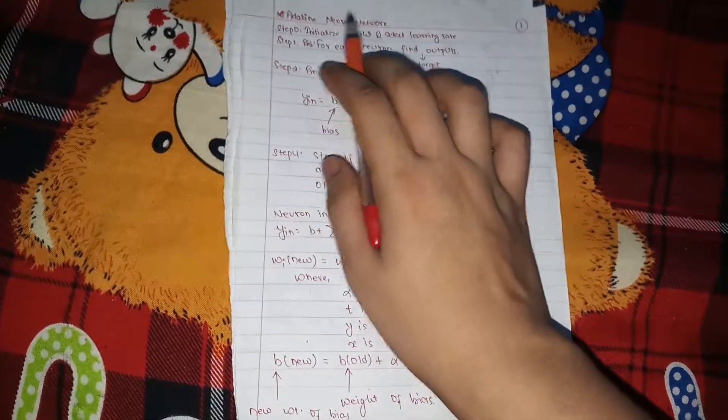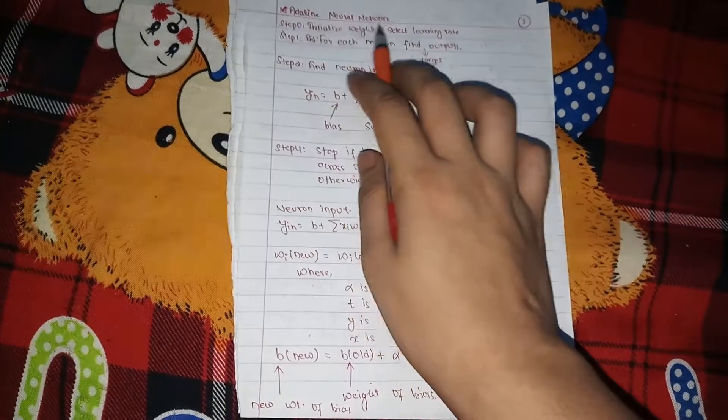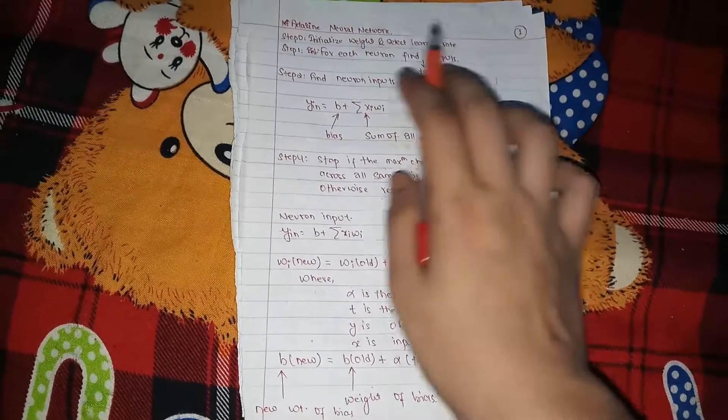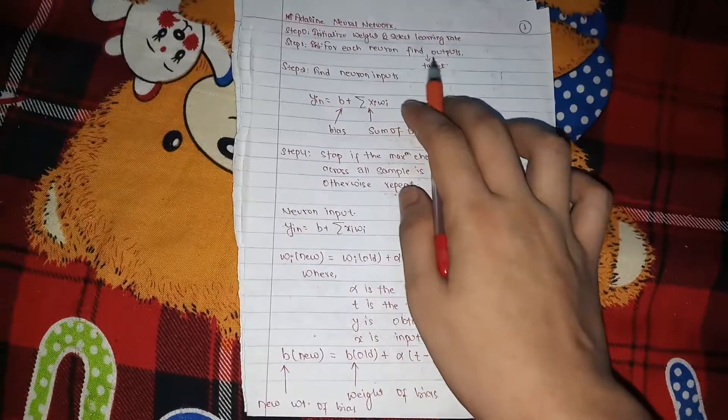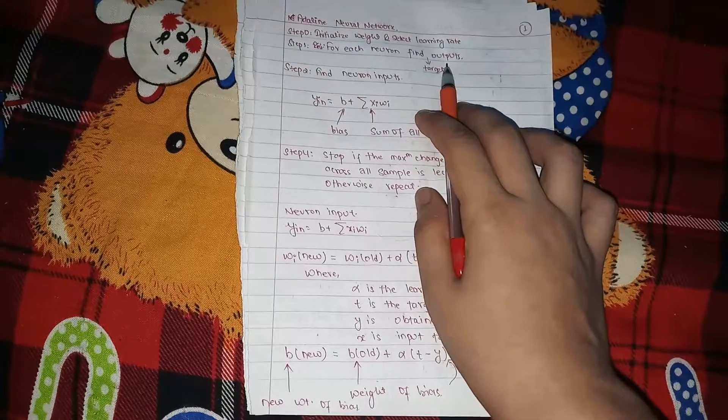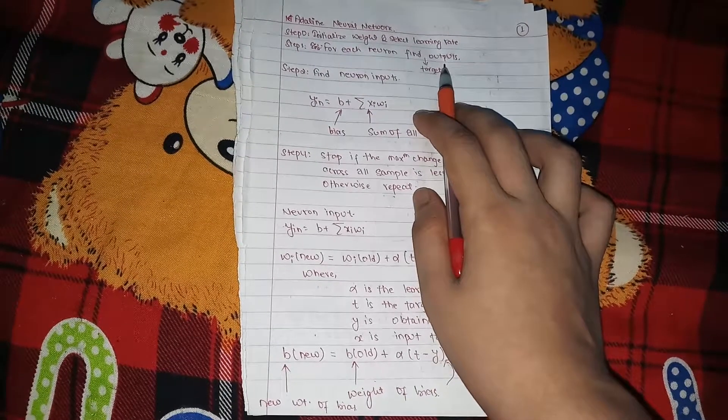This is Adeline Neural Network. At first, you need to initialize the weight and select the learning rate. Now, for each neuron, find the target output, that is what is the output of your data set.